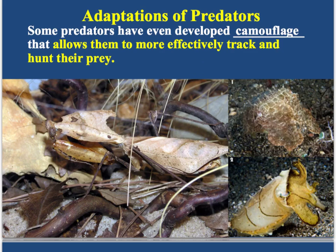Sometimes predators have camouflage as well. In this picture, it looks like just a bunch of leaves, but there's actually a predator hiding there. Here's its head, here's its body, and here are its legs — this is a kind of praying mantis. Praying mantises eat other bugs. Because it's camouflaged, when you first look at the area it just looks like dead leaves — it doesn't look like there's something there that can kill you. That gives it a big advantage when hunting.